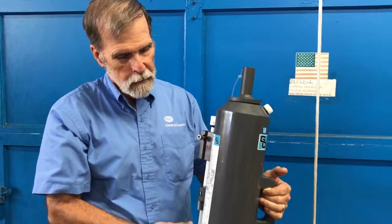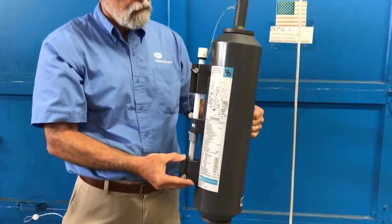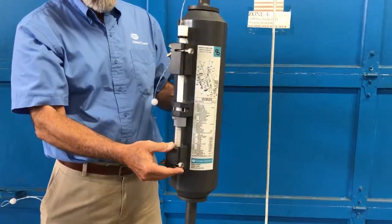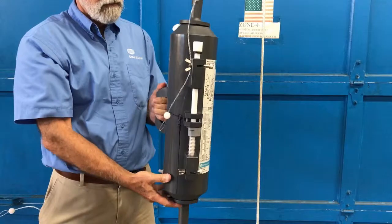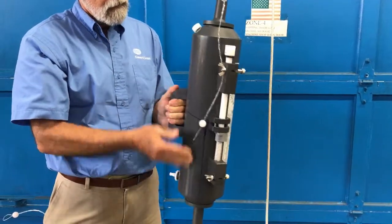The following is a demonstration of how to use the General Oceanics 1010 series Niskin water sampling bottle. The Niskin bottle has a main housing made from PVC pipe.